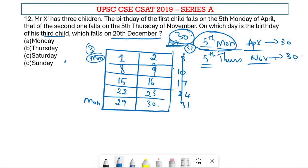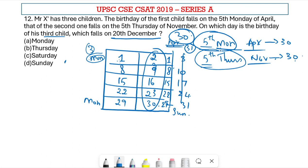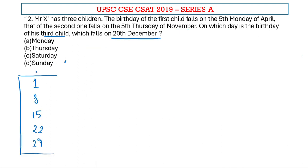We are only dealing with 30-day months because April and November both have 30 days. We know that for April they have given Monday and for November they have given Thursday. So for April to have a 5th Monday, the 1st of April could be a Monday, or alternatively the 2nd of April is a Monday, which means the 1st of April is a Sunday. These are the two possibilities for April.